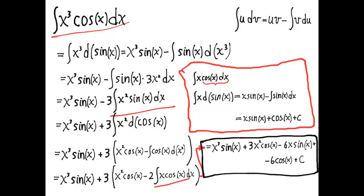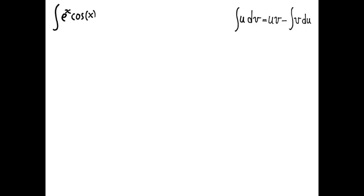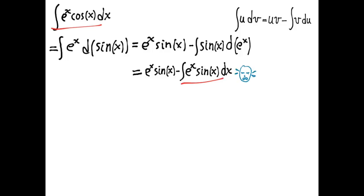That was the end of the second example — product rule, multiple iterations. Now we'll look at product rule type integrals that have cyclic integration by parts. The example is the integral of eˣ·cos x dx. We'll choose cos x dx for dv and apply the integration by parts formula. Since d(eˣ) equals eˣ dx, we've taken eˣ·cos x and turned it into an integral of the form eˣ·sin x dx — which might make us feel sad because it looks no less complicated than the original.